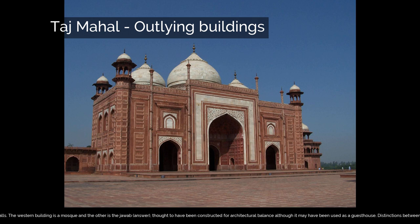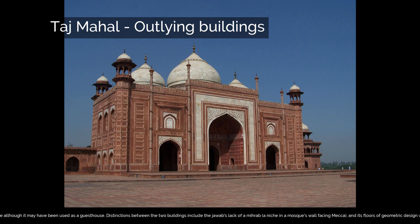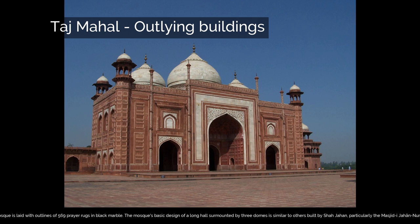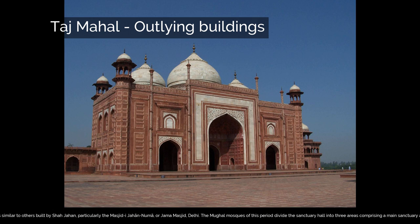Distinctions between the two buildings include the jawab's lack of a mihrab — a niche in a mosque's wall facing Mecca — and its floors of geometric design, whereas the floor of the mosque is laid with outlines of 569 prayer rugs in black marble. The mosque's basic design of a long hall surmounted by three domes is similar to others built by Shah Jahan, particularly the Masjid-i-Jahan-Numa, or Jama Masjid, in Delhi. The Mughal mosques of this period divide the sanctuary hall into three areas: a main sanctuary and slightly smaller sanctuaries on either side. At the Taj Mahal, each sanctuary opens onto an expansive vaulting dome.